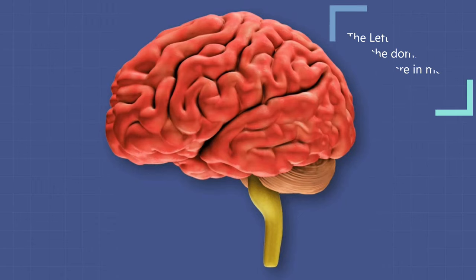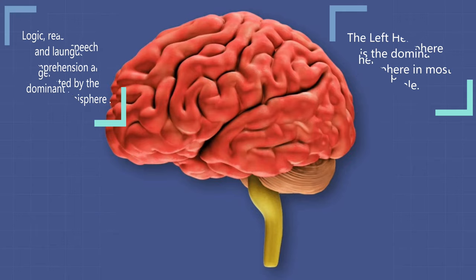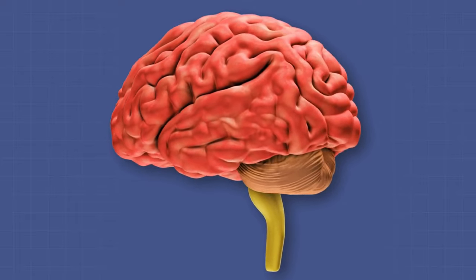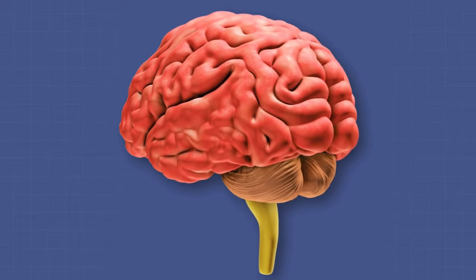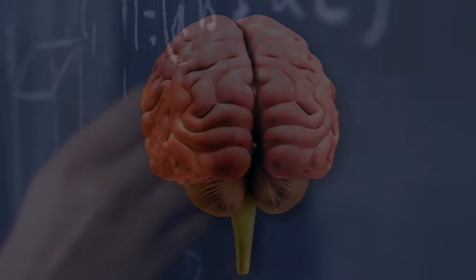Then we can use the dominant hemisphere, with its logic, reason, speech, and writing, to figure out exactly what is wrong. I have a lesson planned on the importance of creativity in science. But for now, let's say that we should listen to that feeling and take the time to re-evaluate our conclusions.